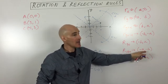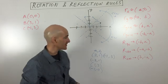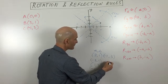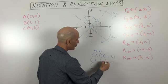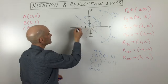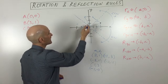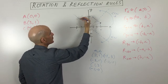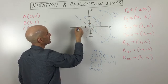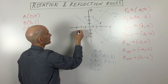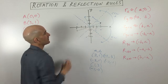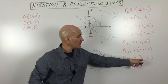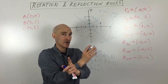For a 180-degree rotation, the x and y coordinates stay in the same positions but both become the opposite sign. So (3, 1) becomes (-3, -1) — that's left 3 and down 1. Using the triangle illustration, if you rotate 180 degrees — a half turn — you can see that's exactly where you end up.